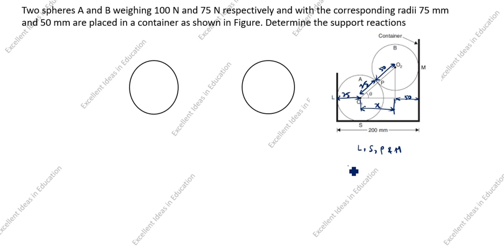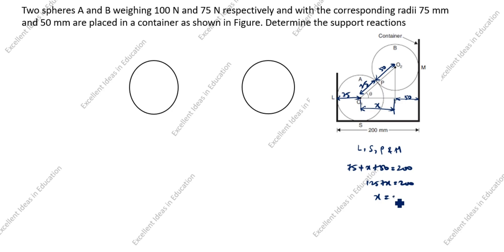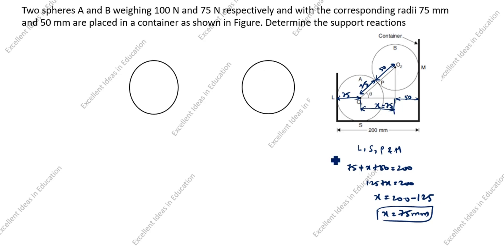We will take the unknown as x. So: 75 plus x plus 50 equals 200. Therefore 75 plus 50 is 125, and x equals 75 mm. So this value is 75 mm, and the total adjacent value is 75 plus 50 equals 125 mm.